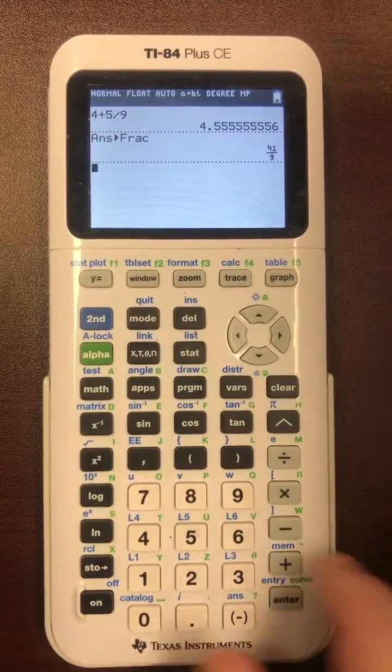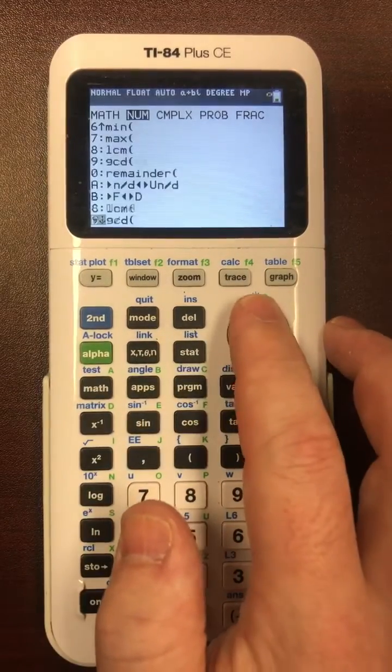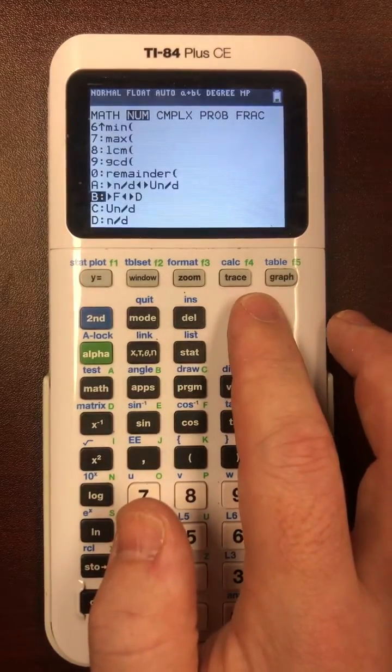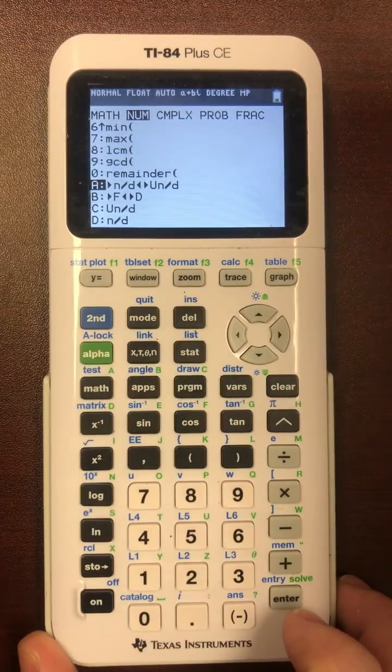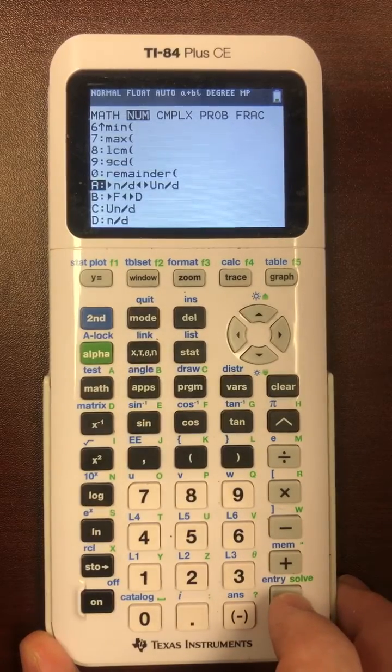What you can do is you hit the math button and then you go to num. At the bottom of the num menu you can scroll from the top or hit up to get there faster. You choose this. What this means is please transform from numerator denominator mode into mixed number mode, U standing for units digit.